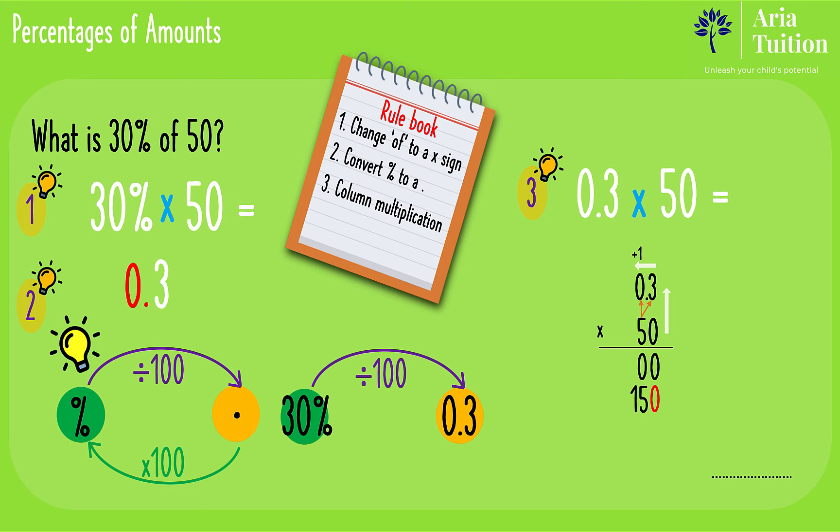Now that there are no more numbers left we are ready to add. Quite simply, 0 add 150 makes 150. So our final answer is 150, right? Not quite.